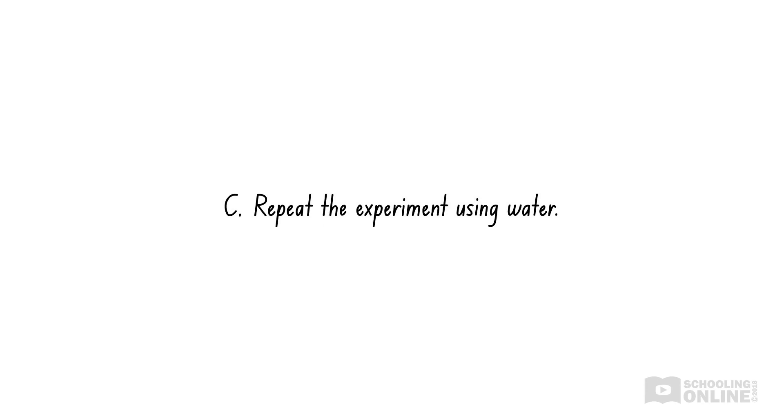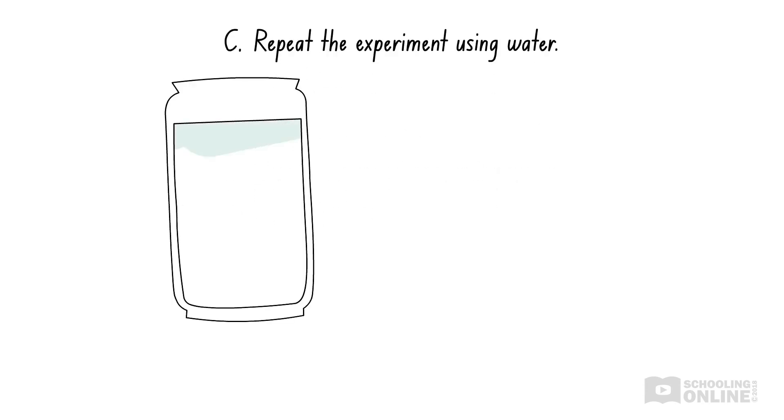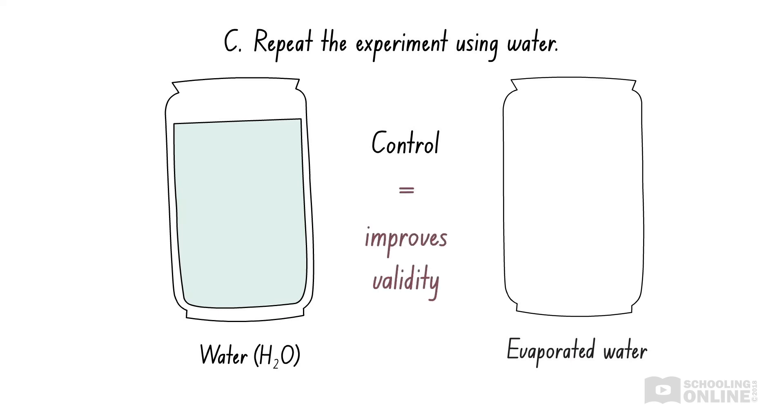Option C says that Marie should repeat the experiment using water. However, if she evaporated all the water, she wouldn't have anything left. This is called a control, where the experiment is performed in a way to test if the method is correct. A control improves the validity of an experiment and has no effect on its reliability. We'll discuss this in our upcoming videos on validity. Therefore, option C is incorrect.